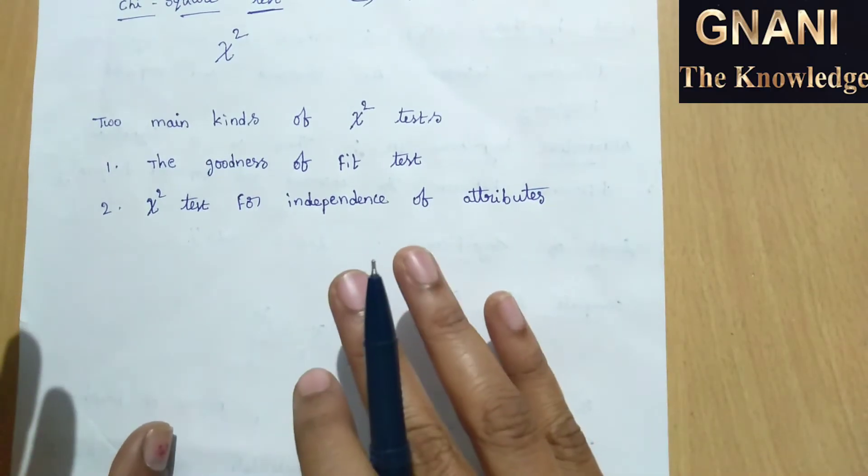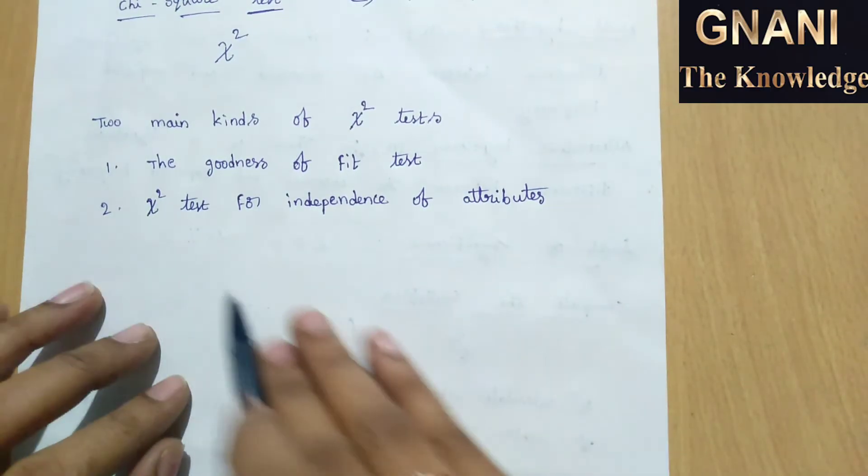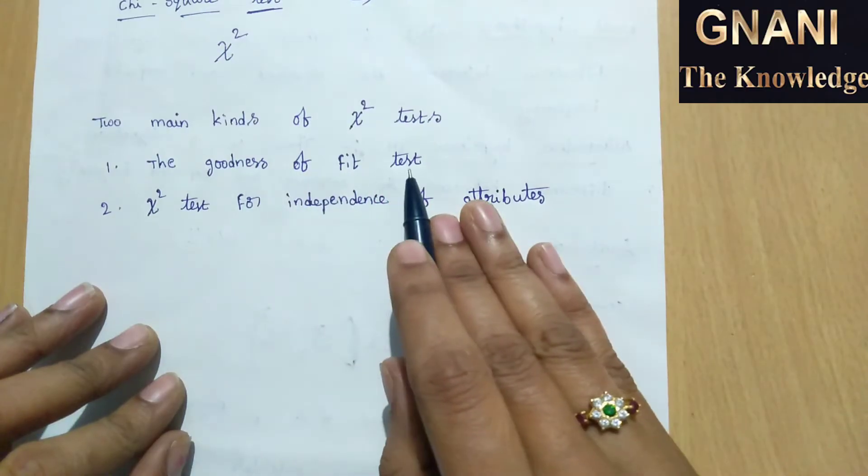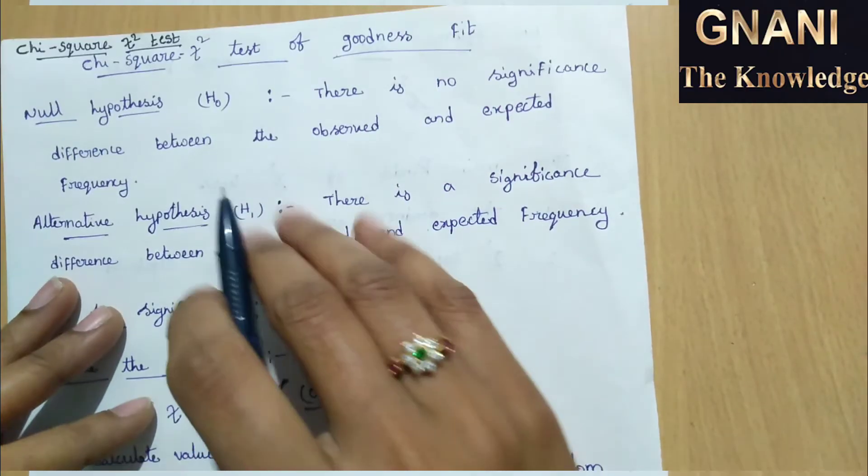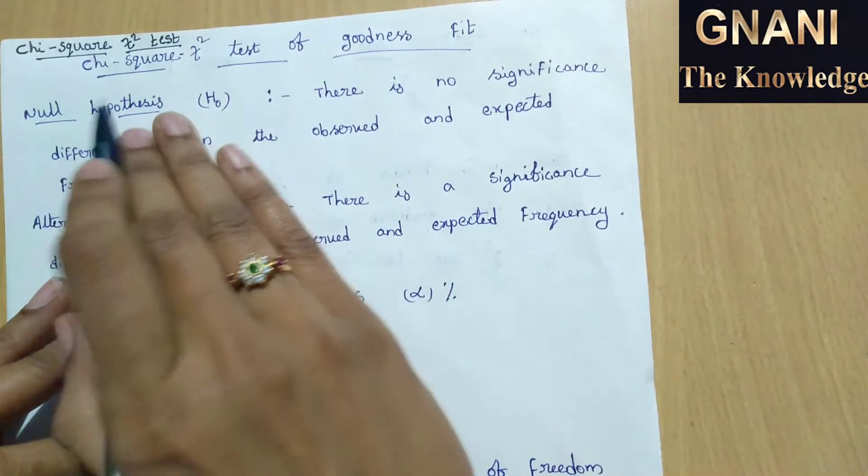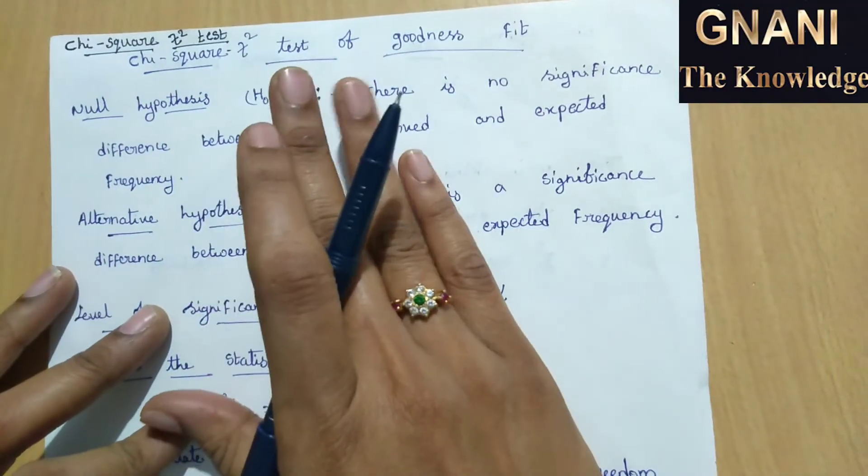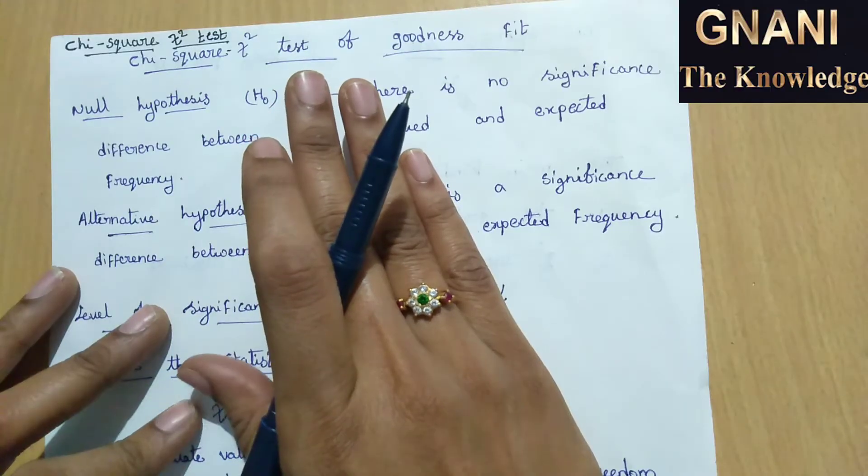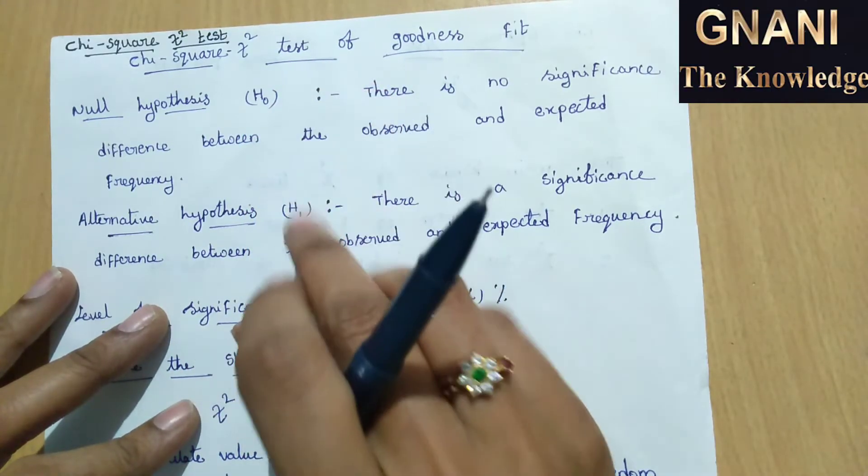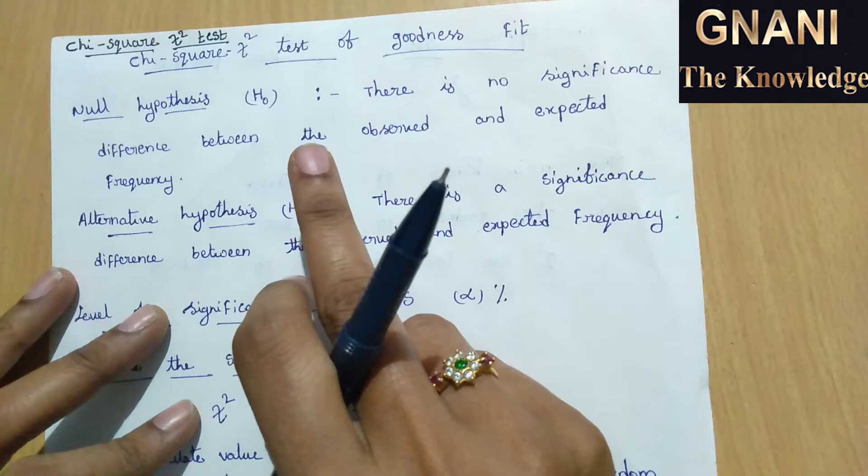In this video we have to understand about the goodness of fit test. So what is the first model of chi-square test? Chi-square test of goodness of fit. I will show you the steps of hypothesis procedure. What is the first step in hypothesis procedure?